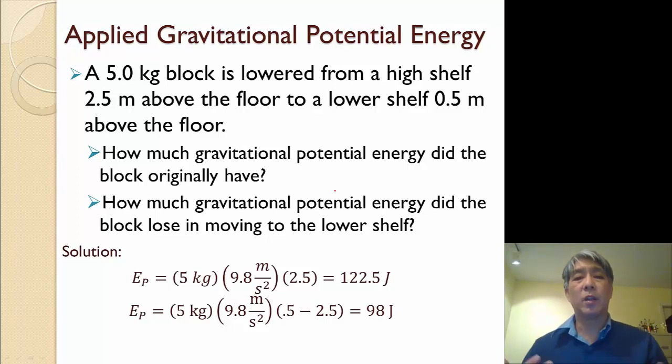Well, calculating it, I basically just plug it into my Mg delta H. Notice I don't give you a ground level, so I might as well use the floor, because that's the lowest point in my diagram. So in this case, my mass is five kilograms, G is 9.8, and my shelf is two and a half meters above the floor. So if I multiply that out, I get 122.5 joules.